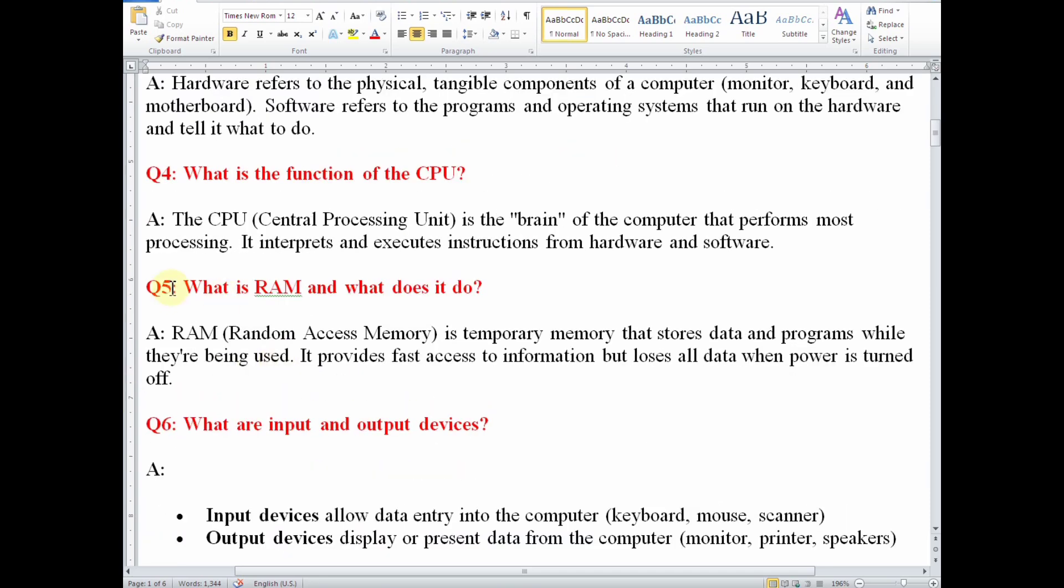Number five, what is RAM and what does it do? RAM, or random access memory, is a temporary memory that stores data and programs while they are being used. It provides fast access to information but loses all data when power is turned off.